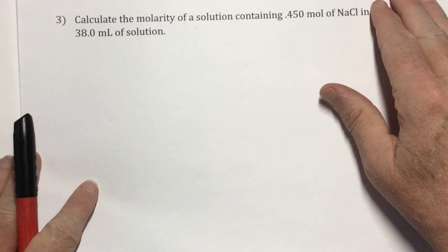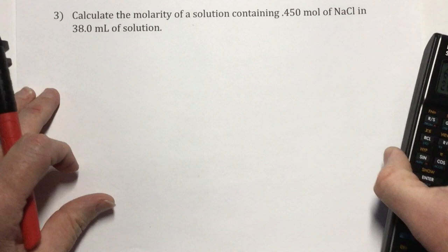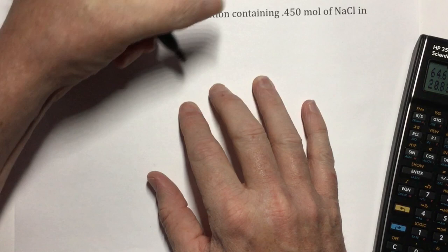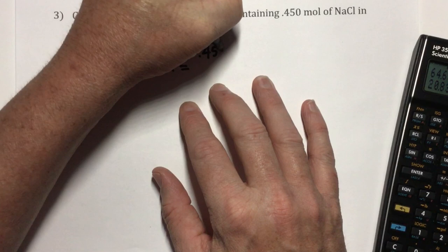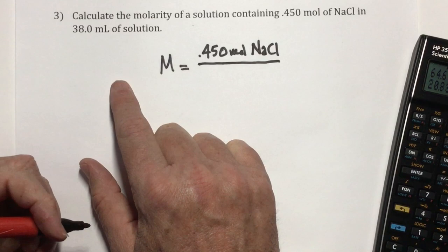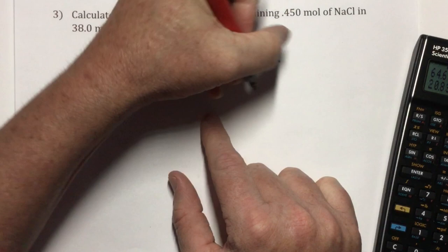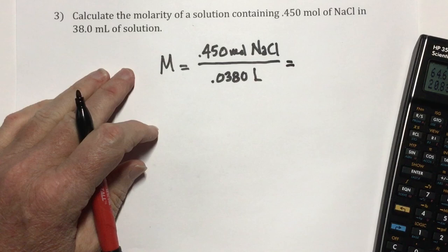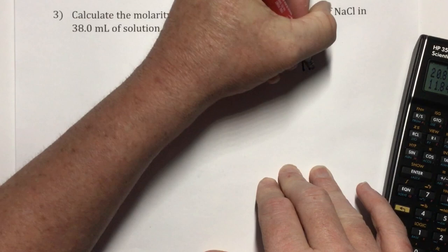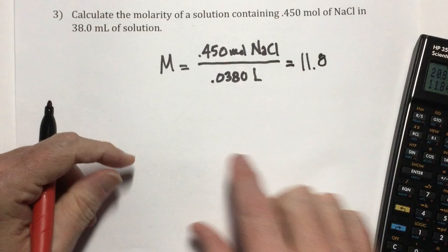Question 3: calculate the molarity of a solution containing 0.45 moles of sodium chloride in 38.0 milliliters of solution. Molarity equals moles, which is 0.450 moles of NaCl, divided by 38.0 milliliters, which in liters is 0.0380 liters. So 0.45 divided by 0.038 comes out to 11.84; to three sig figs that's 11.8. Answer 3: 11.8.